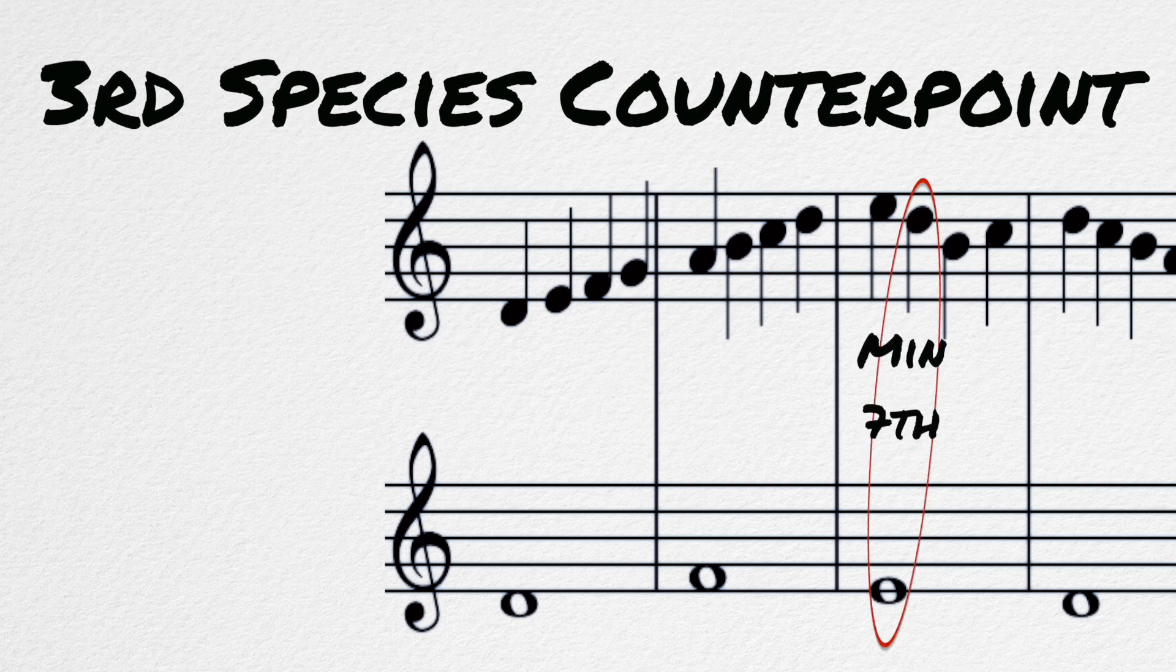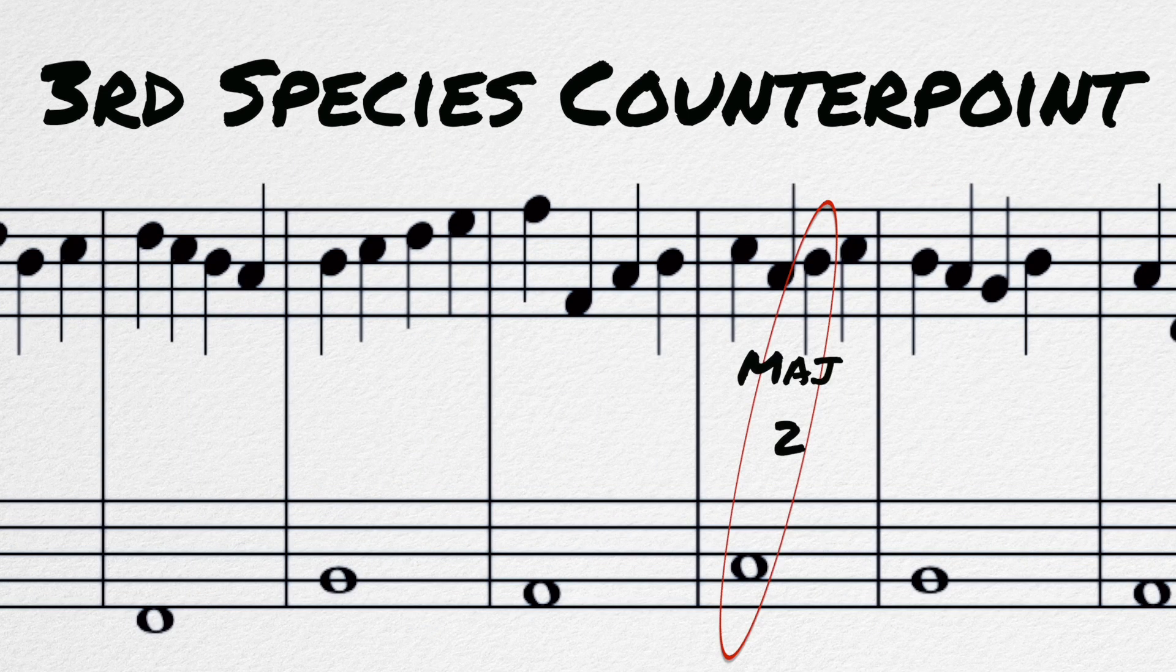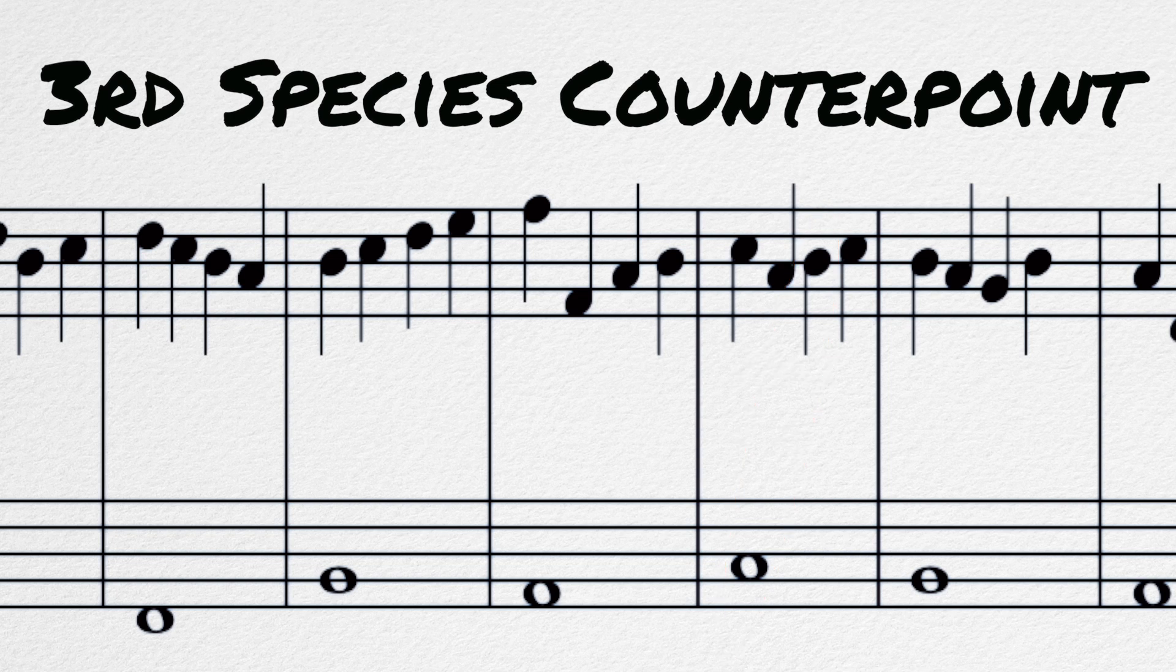You can see here that a leap is made from a dissonant note, or here when a dissonant note occurs on the third beat. These small exceptions are made from melodic contour or ease of singing. Check out the study of counterpoint for more exceptions.